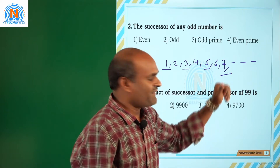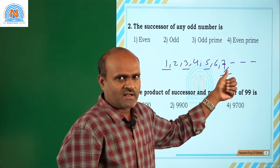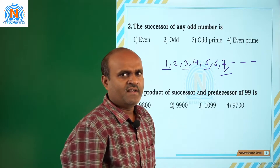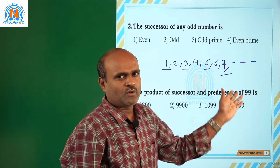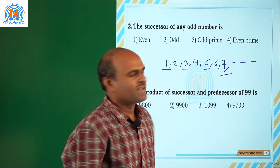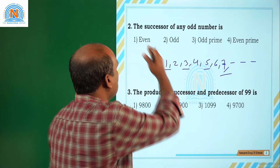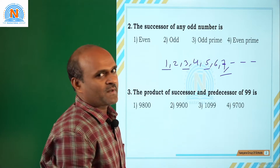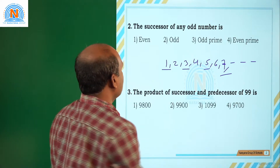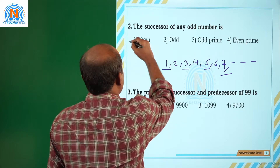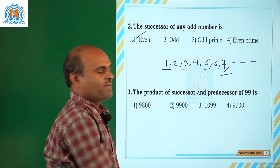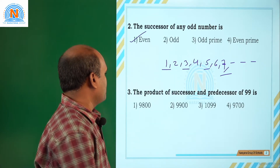Now, 7 is an odd number — what is the successor of 7? It's 8, and 8 is also an even number. So the successor of any odd number is always an even number. The answer is the first option.